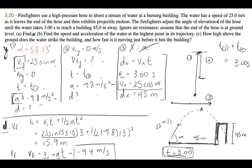So VFY is minus 9.4 meters per second, and the height of the building is 15.9 meters. That's how high the water strikes the building and how fast it's moving just before it hits. So there we have it — Parts A, B, and C.